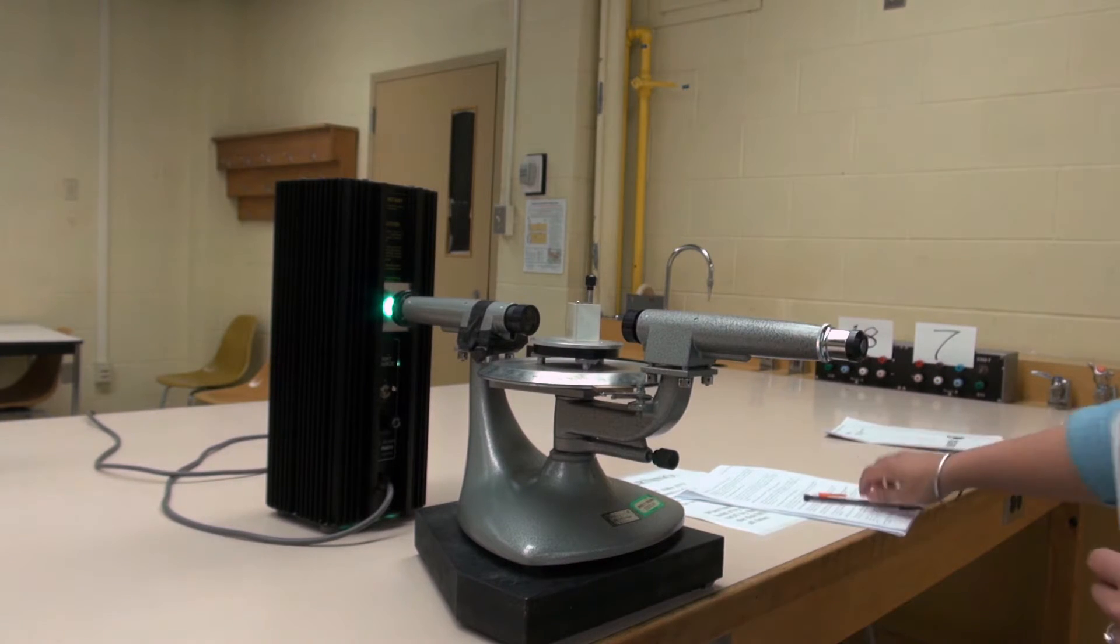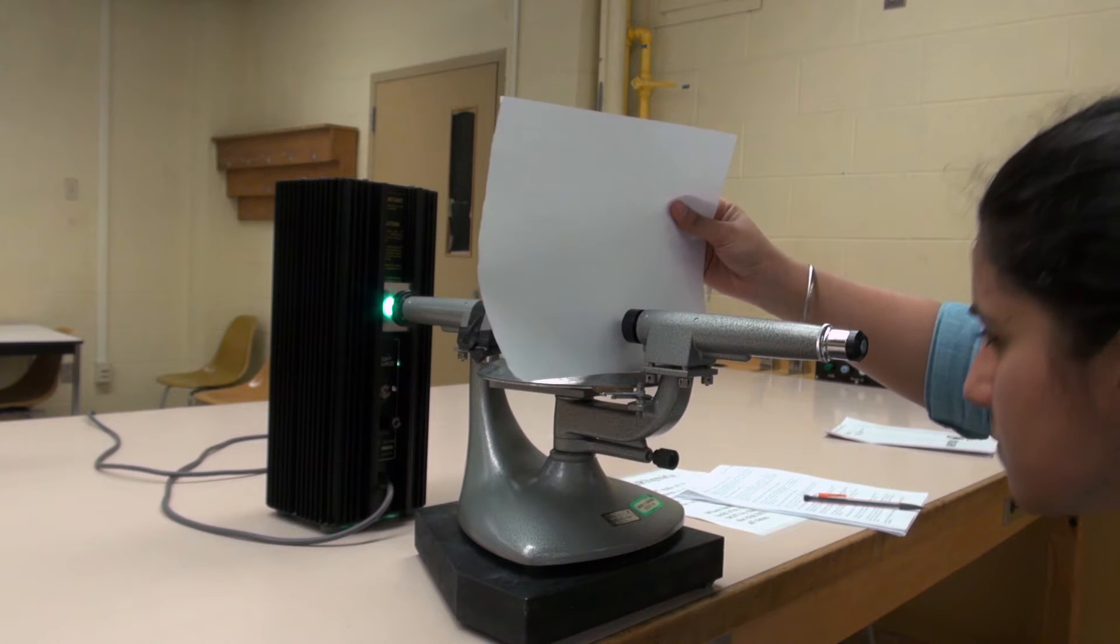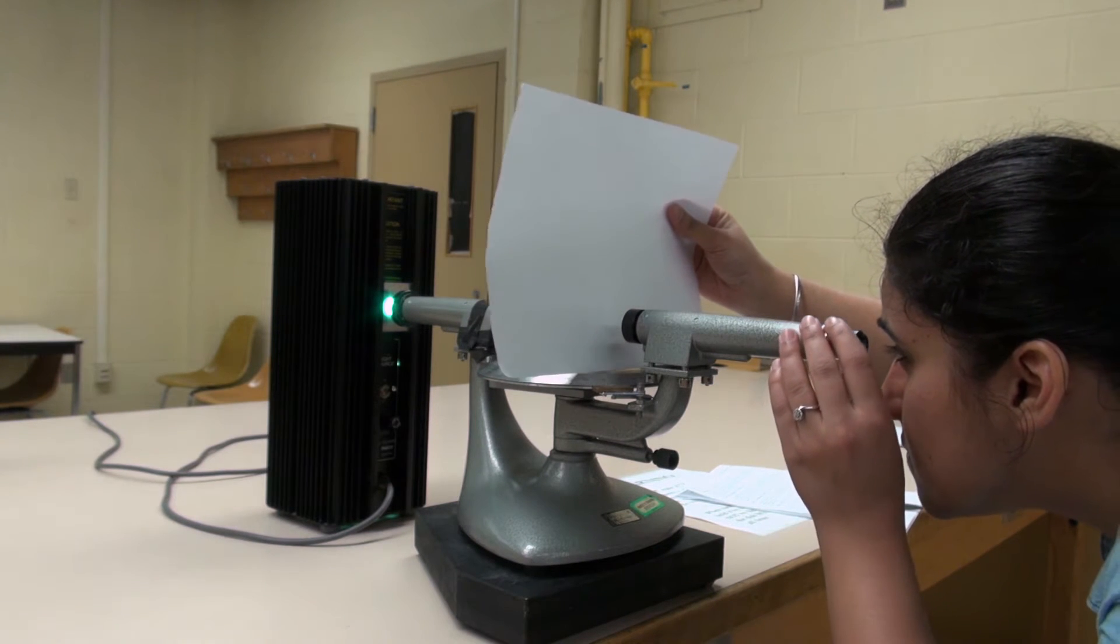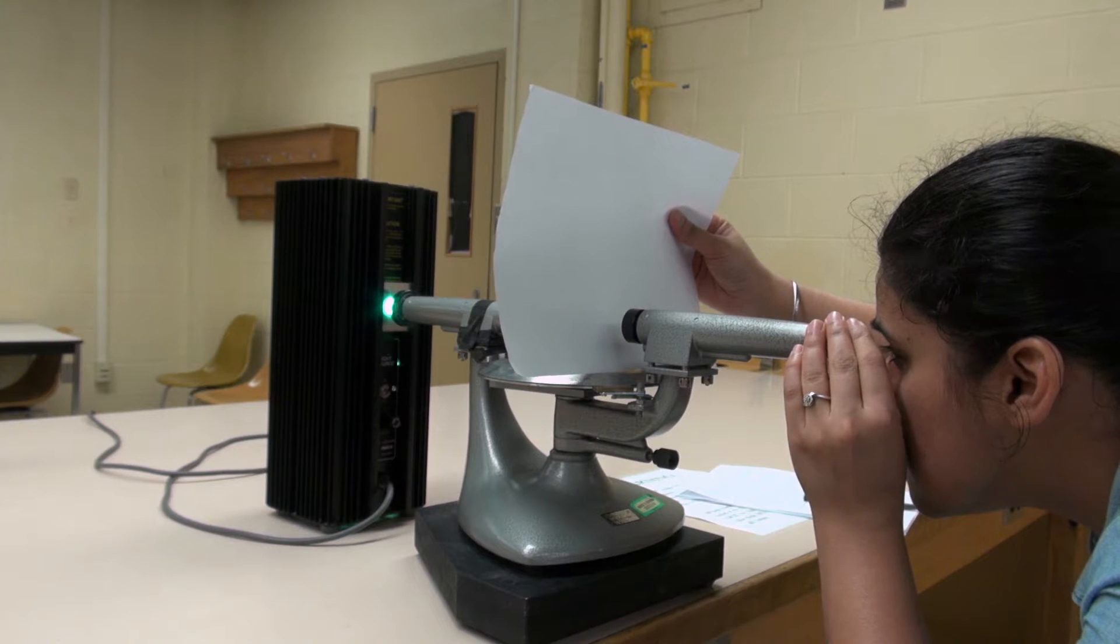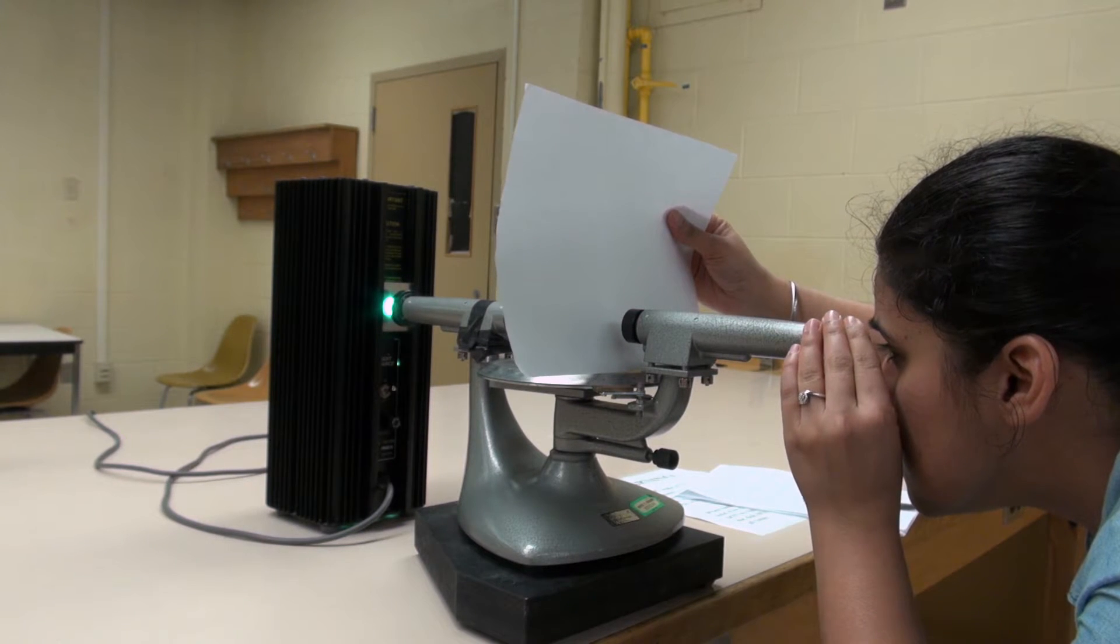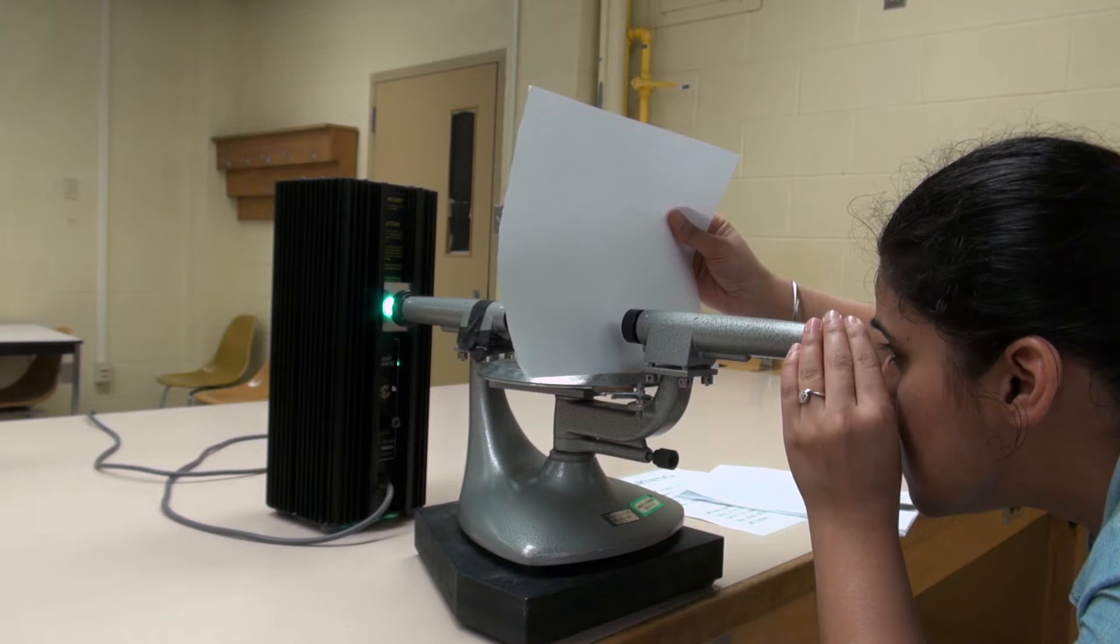Carefully place a sheet of white paper in front of the prism. Look through the telescope and observe the crosshairs. By sliding the eyepiece lens in and out, adjust its position until the crosshairs are in sharp focus.